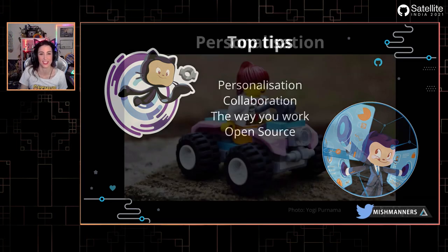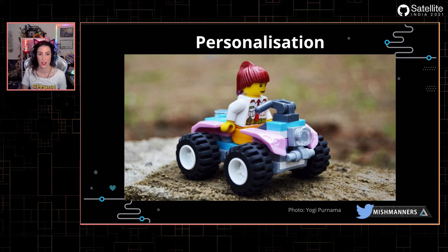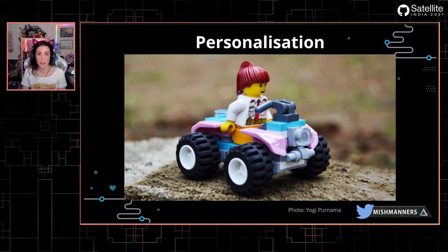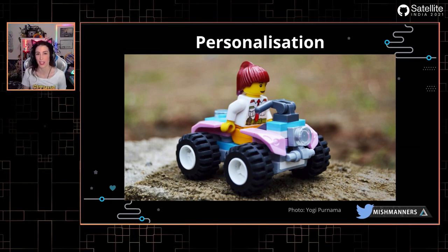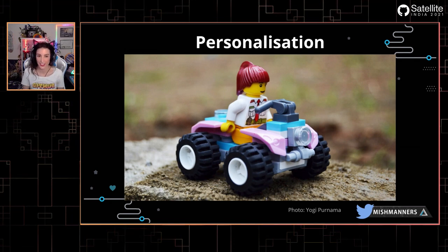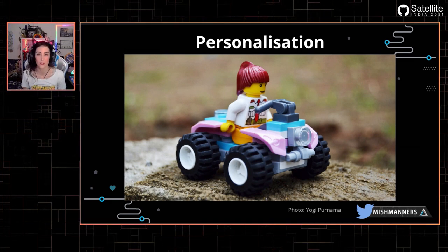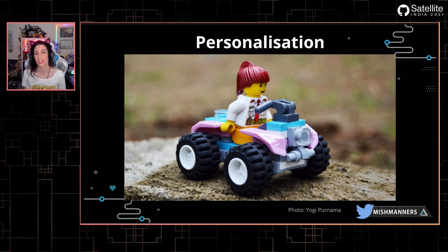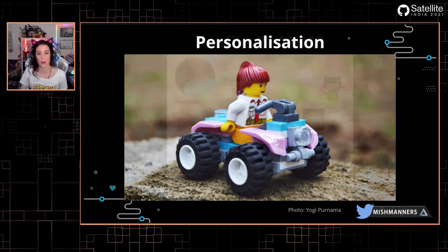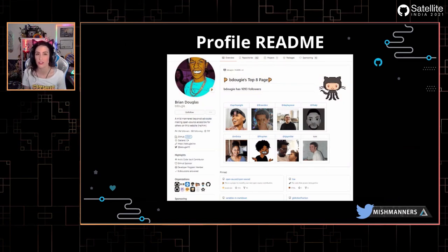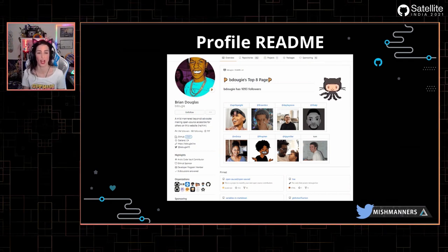Personalization is something that people love. Think about when you create a social media profile for the first time — you add a photo, where you're from, a few things about yourself. Even when building Lego, lots of people like to personalize. Just like you can customize a Lego model or a social media profile, you can customize GitHub too. One of the first ways to do this is our profile README, which we launched last year.